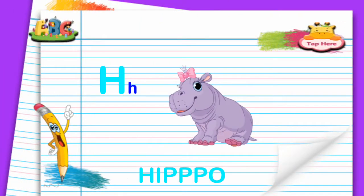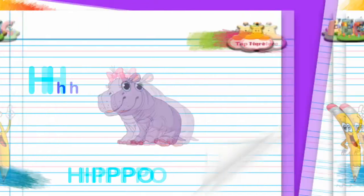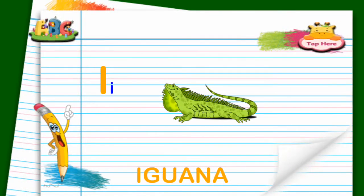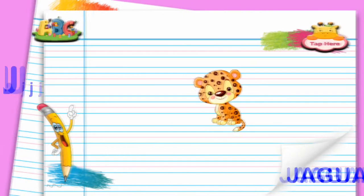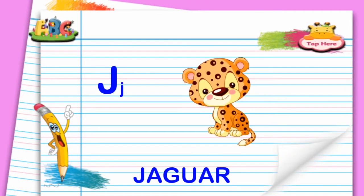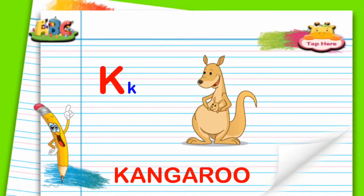I for Iguana. J for Jaguar. K for Kangaroo.